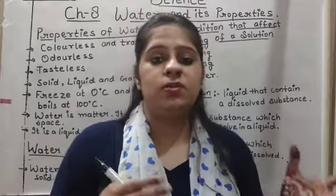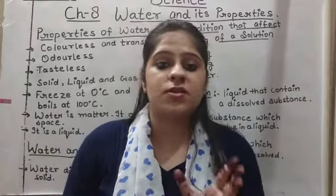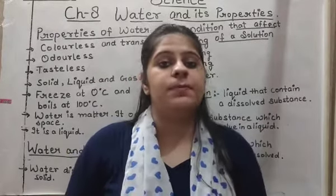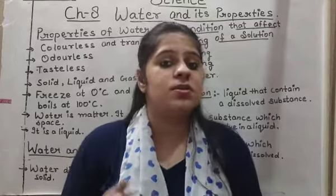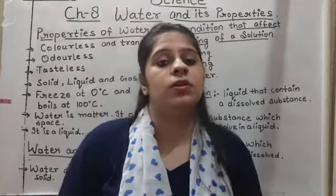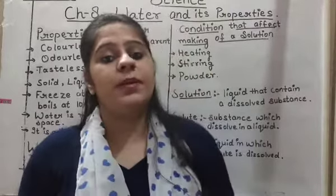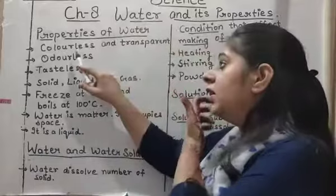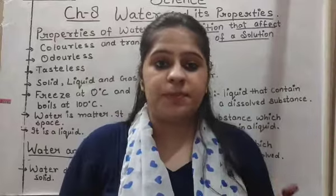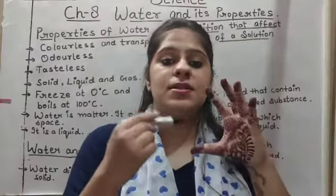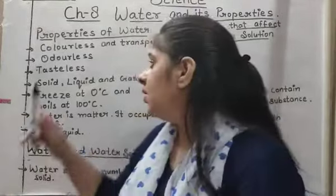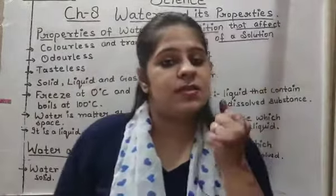We drink clean, fresh water. Water is used for cooking, bathing, washing clothes, and by animals and plants. Now, what are the properties of water? First property: colorless. Water is transparent — you can easily see from one side to another. Second property: odorless, meaning no smell.